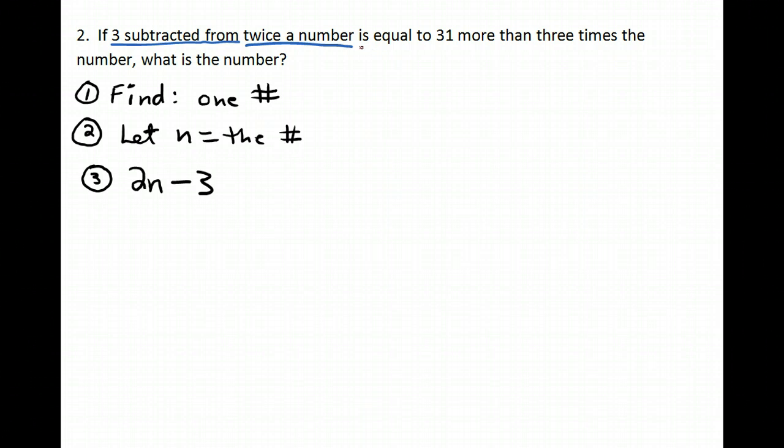Now, is equal to... Obviously, that's my equal sign. Then on the other side, I've got 31 more than three times the number. So, 31 more than means we're going to add 31 to something. Three times the number. So, 3n. And there's my equation.